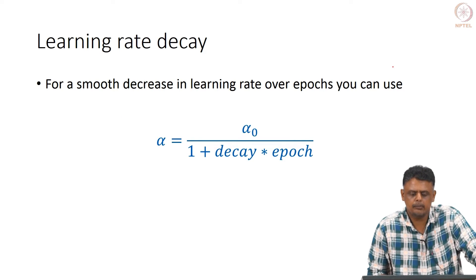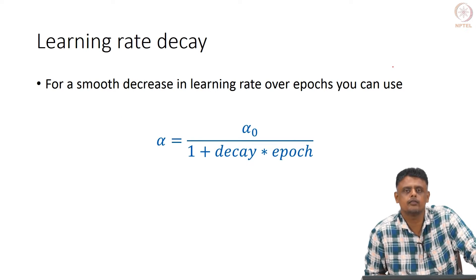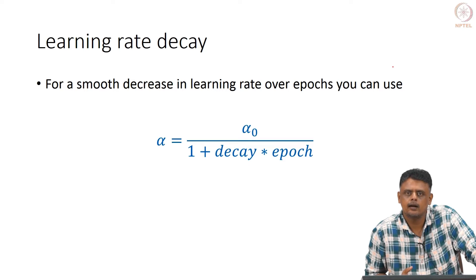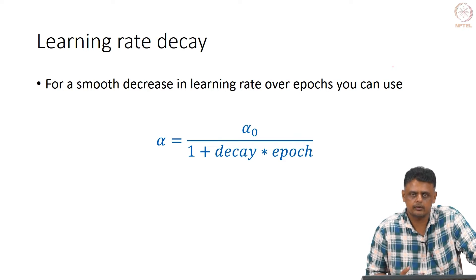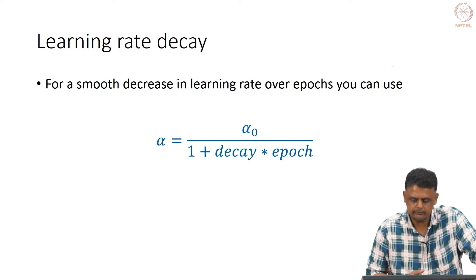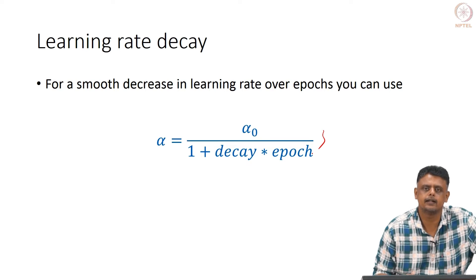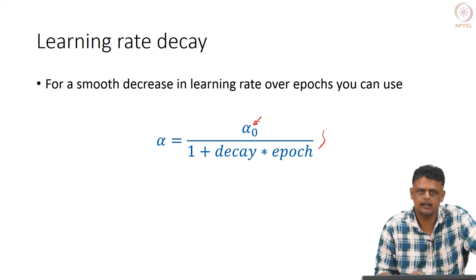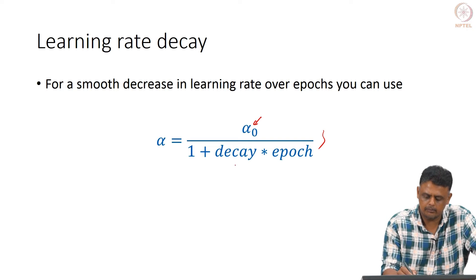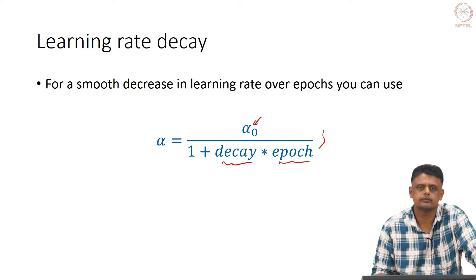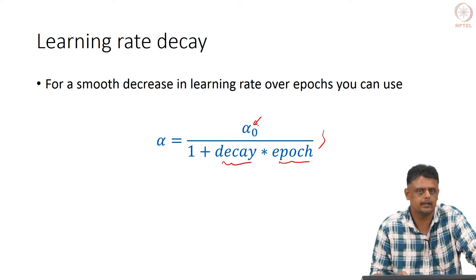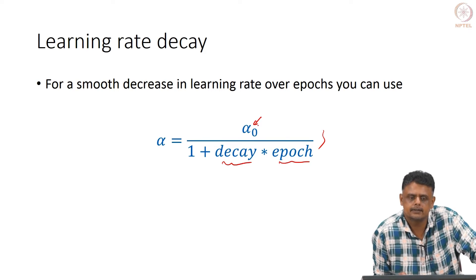More automated approaches ensure a smooth decay. Rather than decreasing by a fixed set amount every epoch, you use a formula: α = α₀ / (1 + decay_rate × epoch_number), where α₀ is your initial learning rate. As the number of epochs increases, your learning rate decreases smoothly depending on the magnitude of the decay rate.